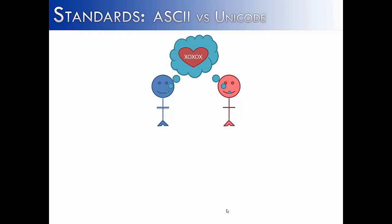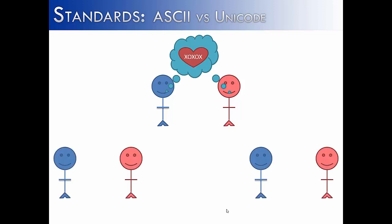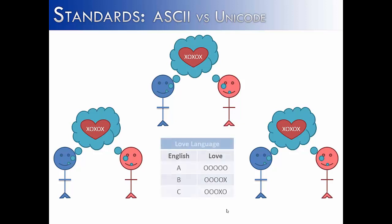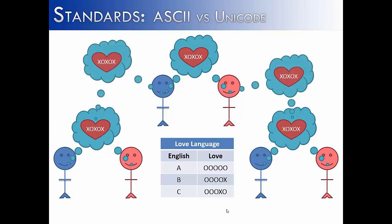But we don't want this language to be just between ourselves — we want to share it with everyone. We would have to find some other people to share it with and teach them how to use X's and O's to write out a letter. We share with them the table we've created: five O's mean A, four O's and one X mean B, so on and so forth. And now they too can speak to one another in the language of love. It's important to note that if we're all going to talk in this language of love, everyone pulls from the same series of X's and O's, because if the standard starts changing, it's simply not going to work. We have created our own language with a standard on which to base everything.